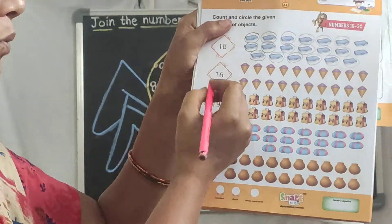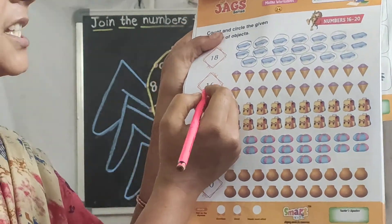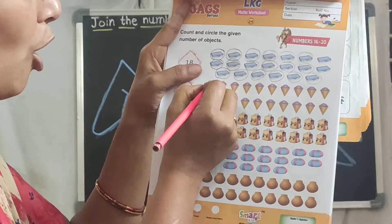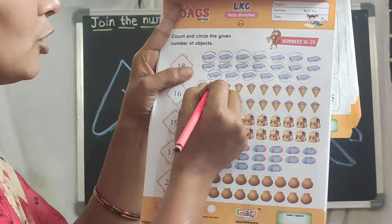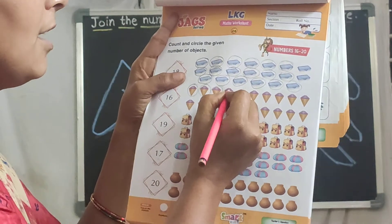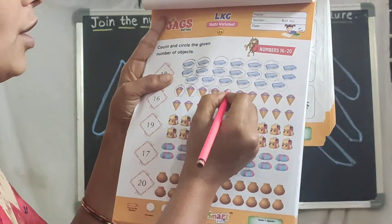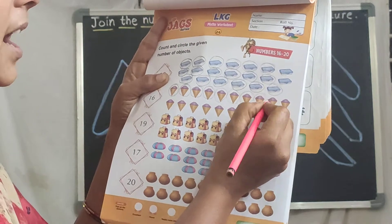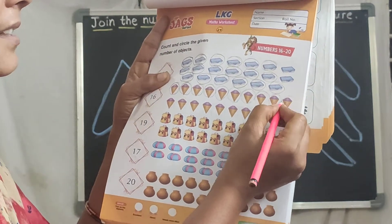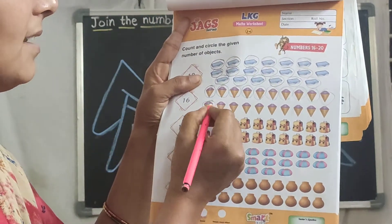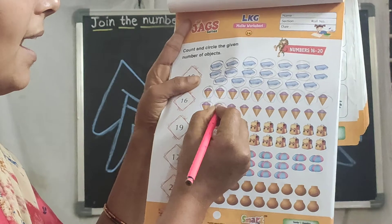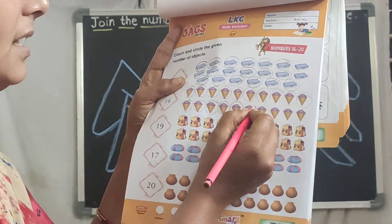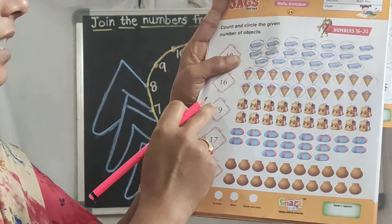Come down. What is number 16? Count up to 16 and circle the tops. 1, 2, 3, 4, 5, 6, 7, 8, 9, 10, 11, 12, 13, 14, 15, 16.